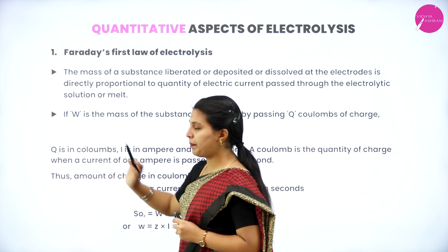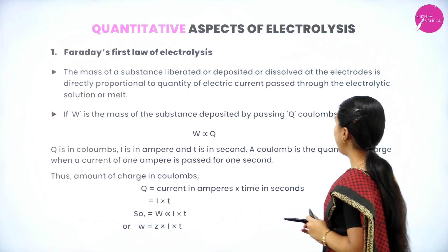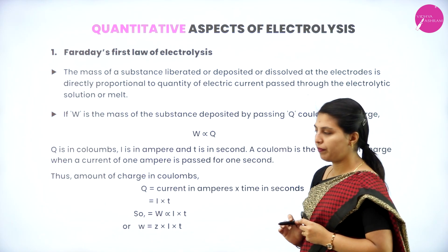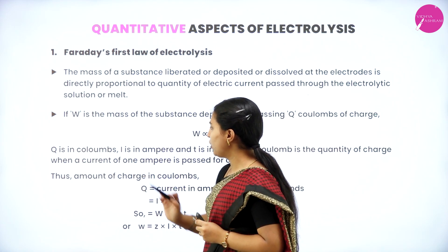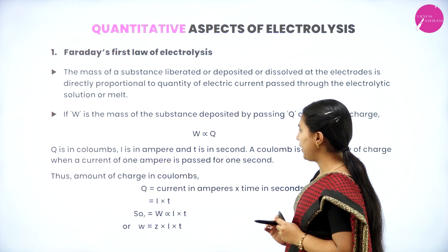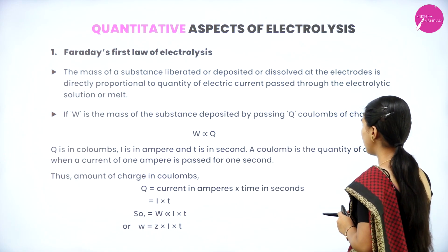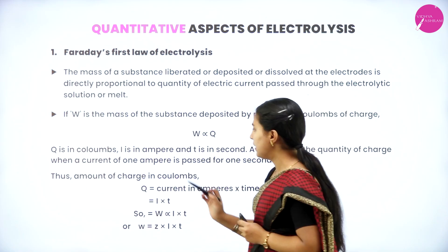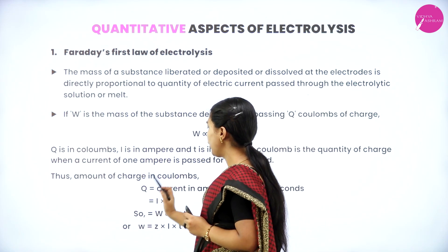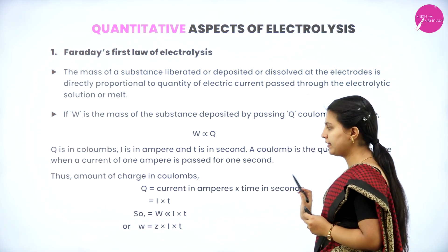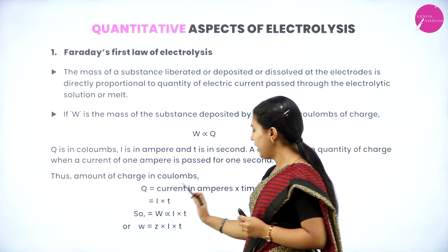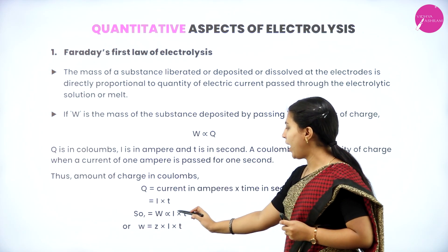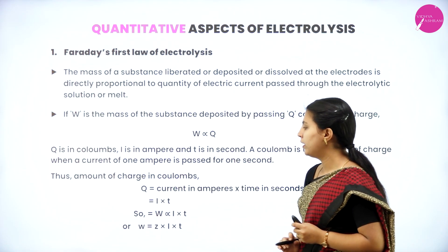The mass of the substance is represented by W, and the electric charge is represented by Q in coulombs. Q is in coulombs, I is in amperes, and T is in seconds. A coulomb is the quantity of charge when a current of 1 ampere is passed for 1 second. Thus, Q = I × T, and W is directly proportional to I × T.